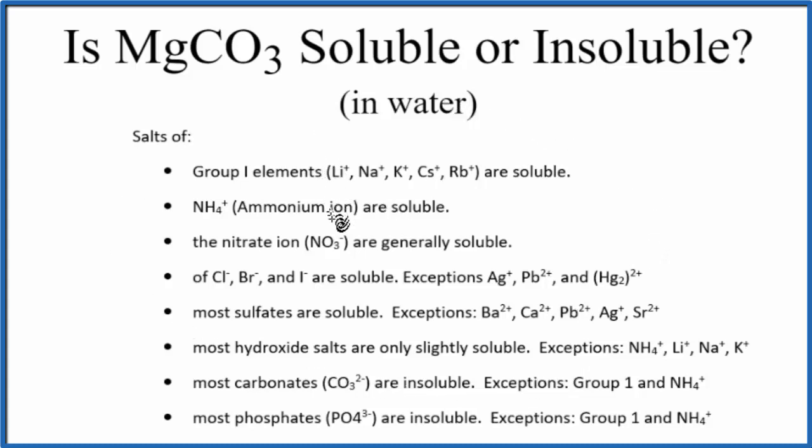So let's go down the solubility rules, and here it says most carbonates, the CO3 2-, so this is a carbonate ion here. They are insoluble, with a few exceptions, group 1 and then this ammonium. Magnesium on the periodic table is in group 2, so this is going to be insoluble according to our solubility rules.